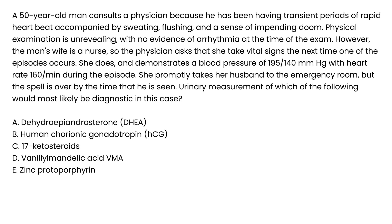Clinical vignette two: A 50-year-old man presents with transient episodes of rapid heartbeat accompanied by sweating, flushing, and a sense of impending doom. Physical exam is unrevealing with no evidence of arrhythmia at the time of the visit. However, his wife is a nurse, so the physician asks her to take vital signs during the next episode. She demonstrates a blood pressure of 195/140 and a heart rate of 160 during the episode, then promptly takes him to the ER, but the spell is over by the time he is seen.